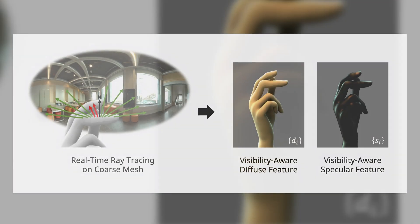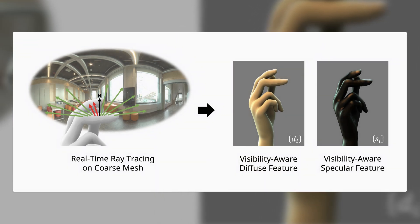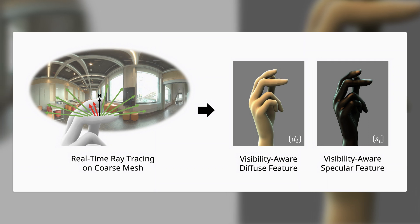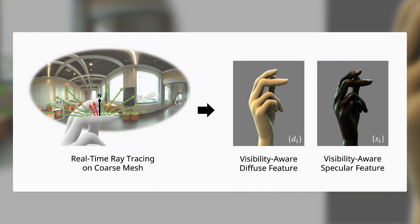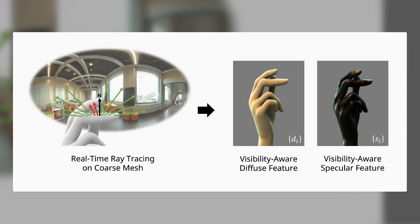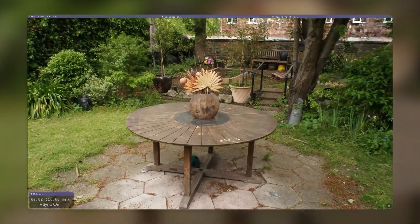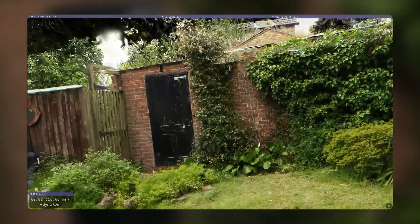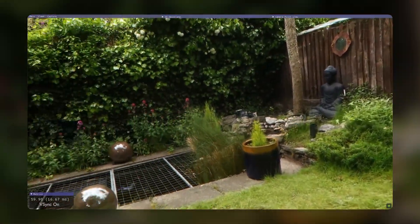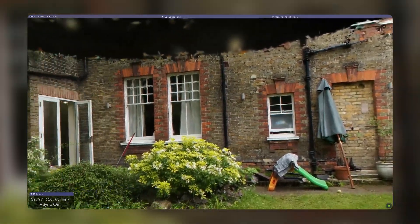However, anisotropic splatting alone is not enough to handle occlusions correctly. To solve this, they use a visibility-aware rendering algorithm that computes a depth map for each input image or video frame using multi-view stereo. They then use this depth map to determine which 3D Gaussians are visible from each viewpoint and which are occluded, enabling real-time rendering of novel views with correct occlusion handling and high visual quality.